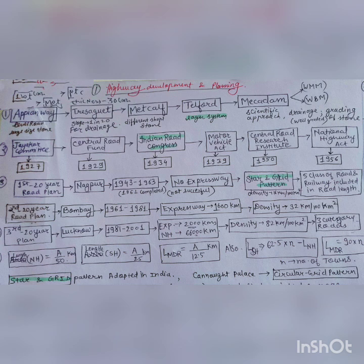Star and grid pattern is adopted in India. At Connaught Place, circular grid pattern was adopted. Thank you.